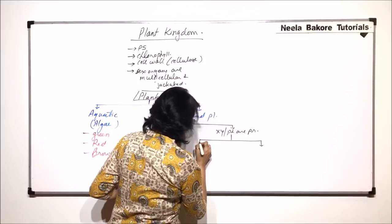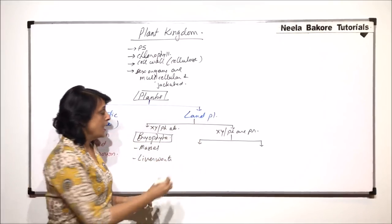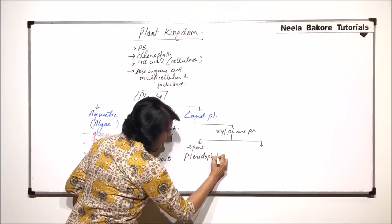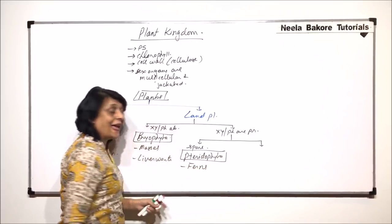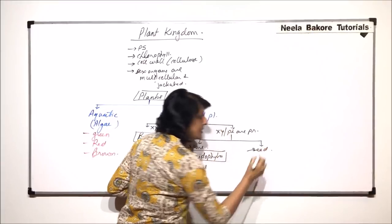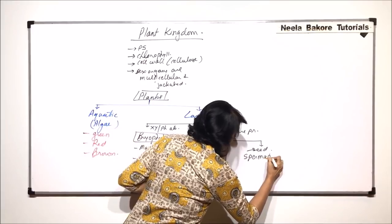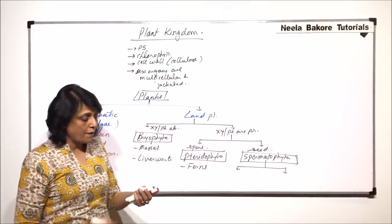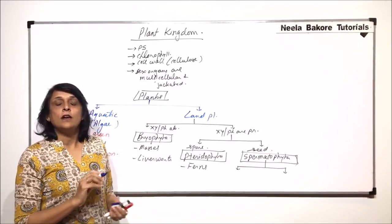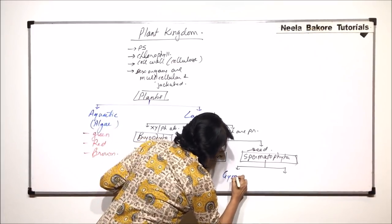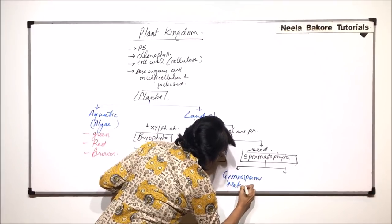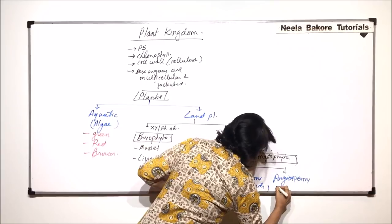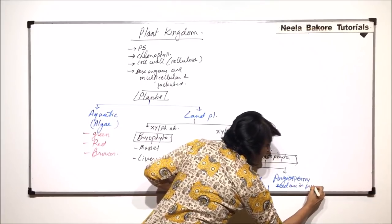This second group — plants with vascular tissue — is further divided on the basis of how they reproduce. If they reproduce by spore formation then that group is Pteridophyta, which includes ferns. The next group reproduces by seed formation and is known as Spermatophyta. Spermatophyta is further divided into two groups based on where the seeds are: if seeds are naked and not covered in any fruit, that group is Gymnosperms, whereas the other group is Angiosperms where the seeds are enclosed in fruits.